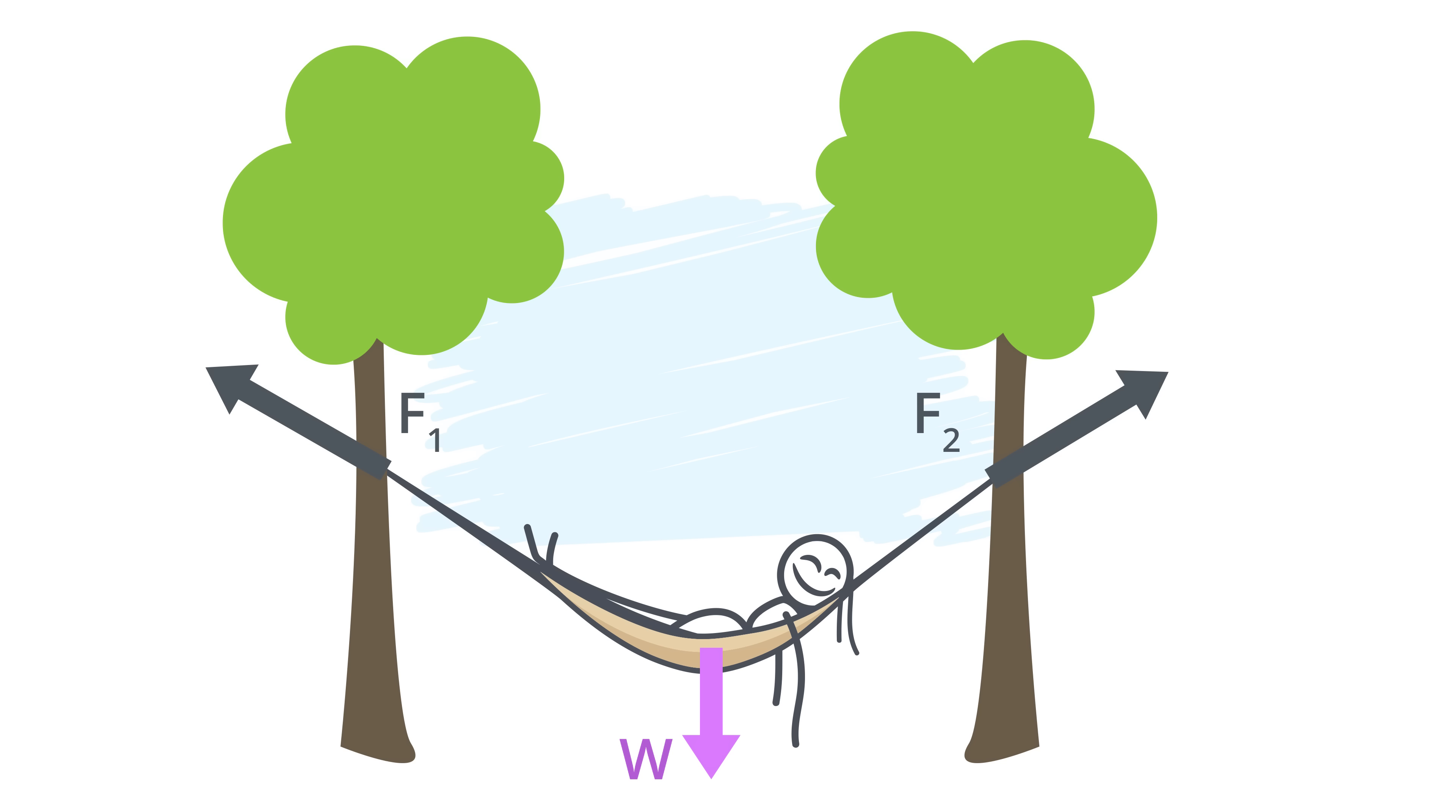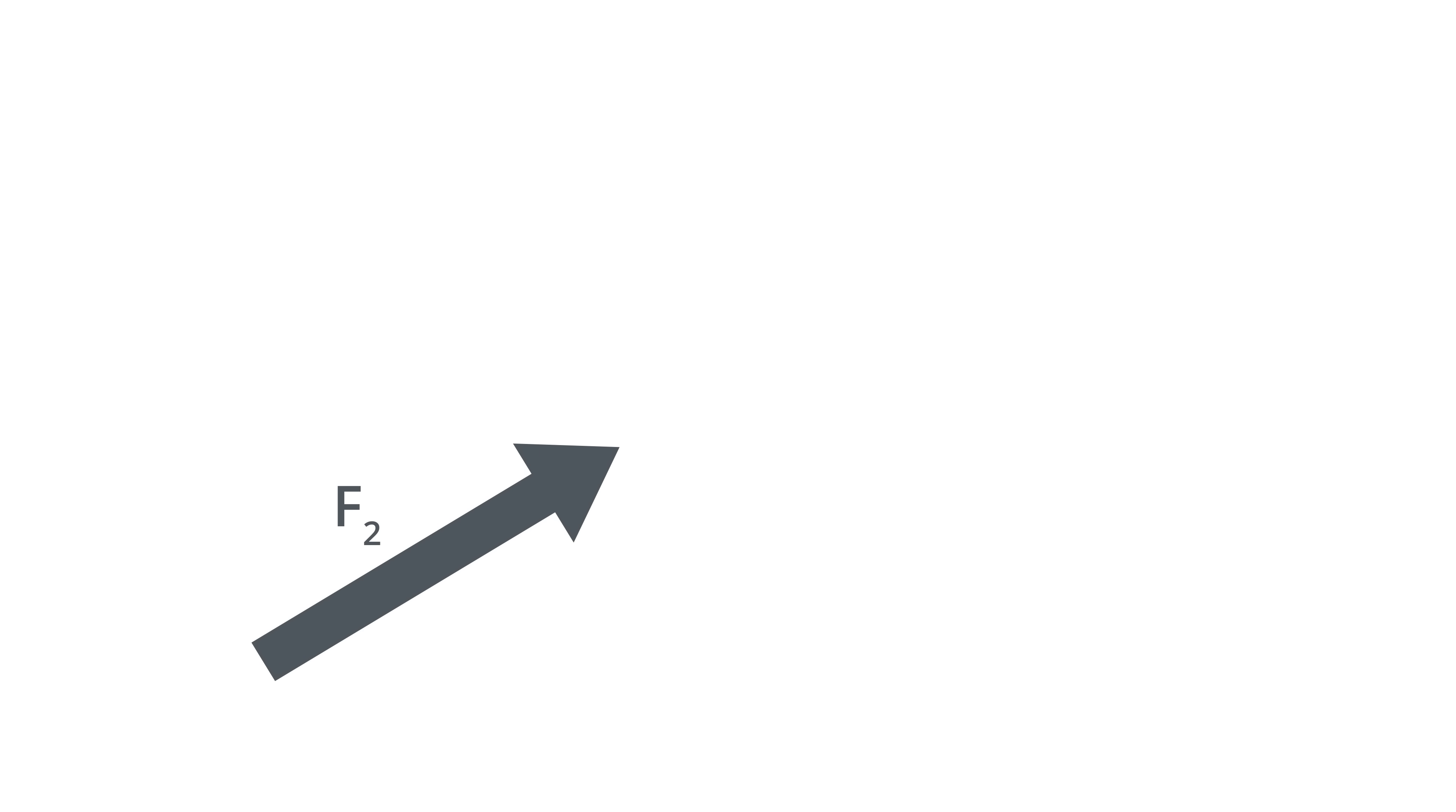For purposes of analysis, engineers often break forces into their components. Here, we break the force in the rope on the right, that is F2, into its horizontal and vertical components. To do so, we draw the rope force as a vector, making its angle match the direction of the rope and drawing its length proportional to the magnitude of the force it carries.